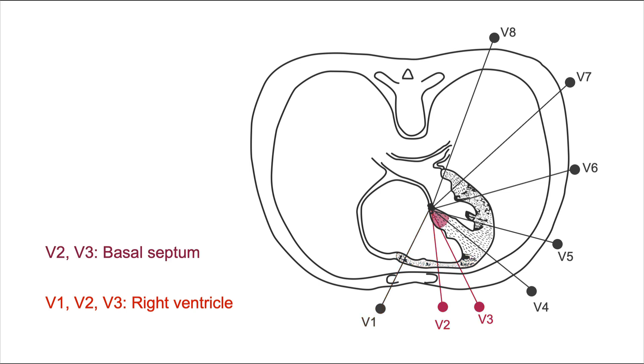As you can see here, V2 and V3 also give you information about this area of the heart, which is the basal septum. So when you have changes like myocardial infarction-related changes seen only in those two leads, it's probably safe to say that the basal septum is affected.